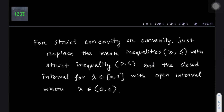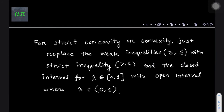Finally, to get strict concavity or strict convexity, we just need to replace the weak inequalities in our definitions with strict inequalities, and we need to replace the closed interval for the values of lambda with open intervals. This gives us a strictly concave or a strictly convex function.